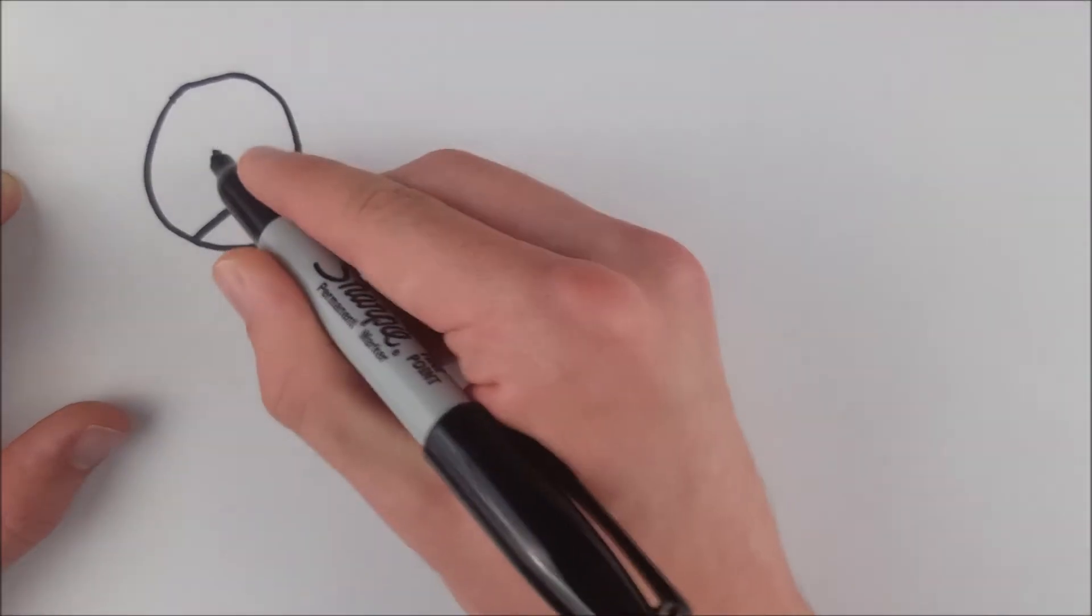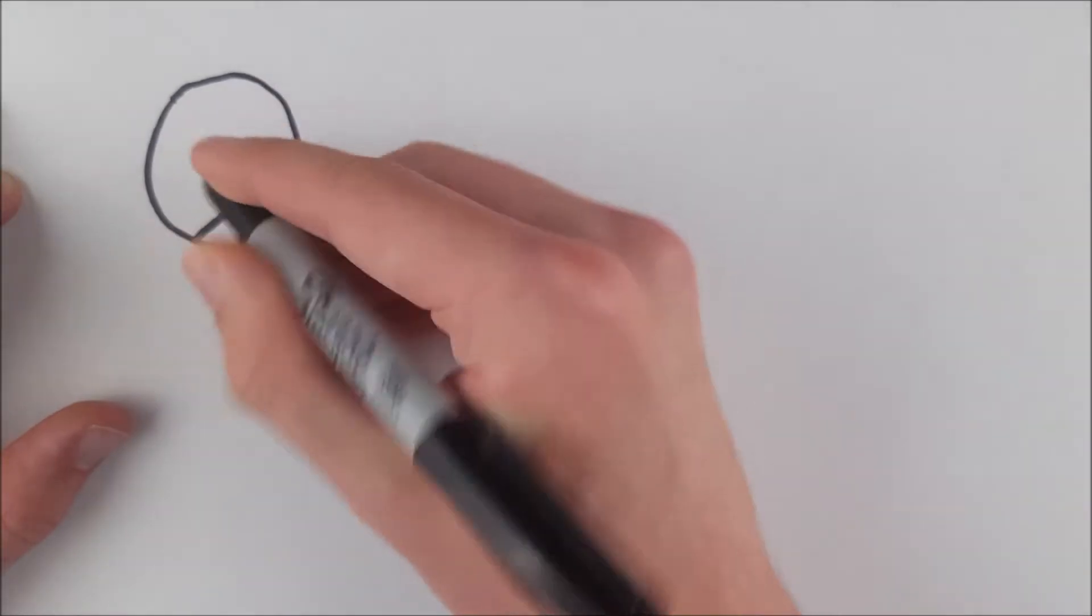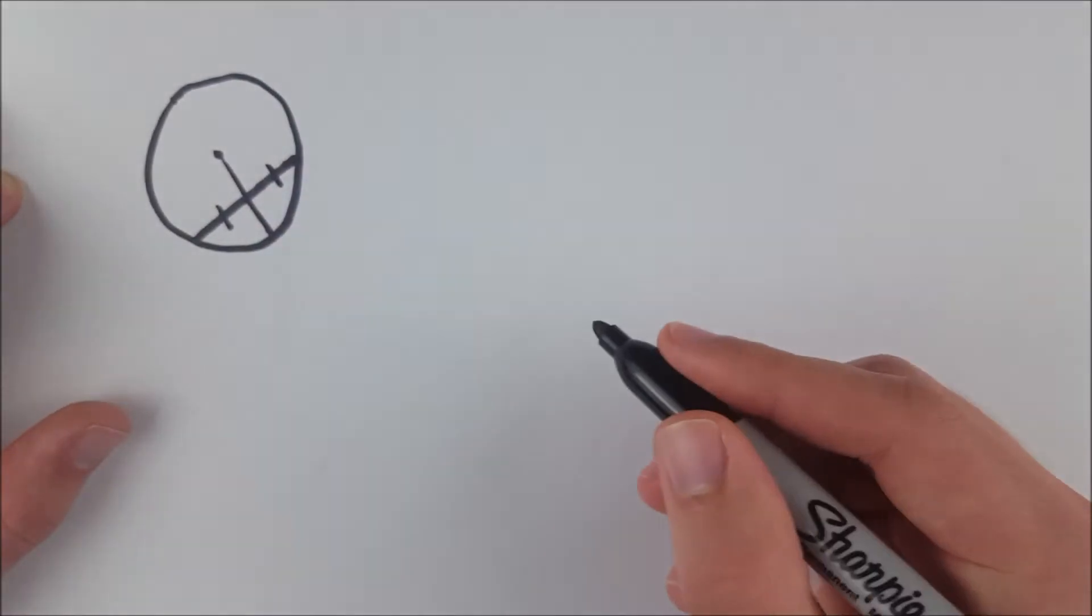If a radius bisects a chord, so here we've got a radius, and it bisects this chord, so we know that this little piece here is congruent to that little piece there.